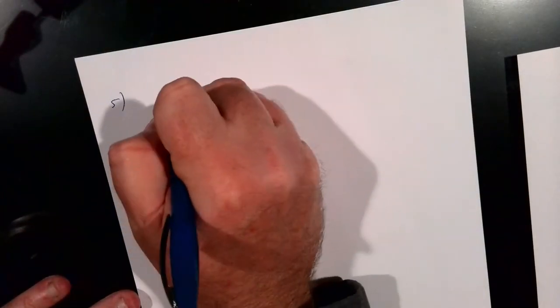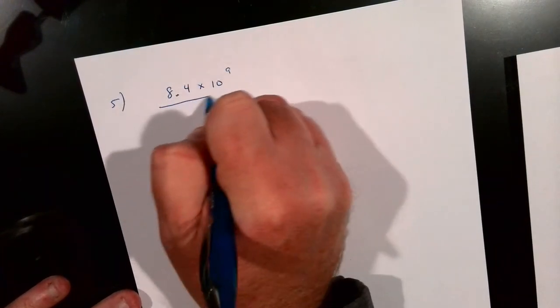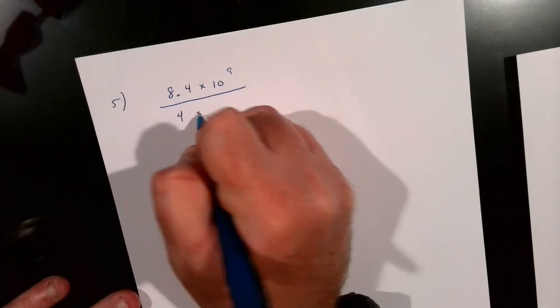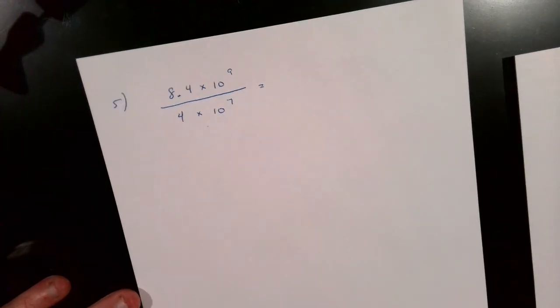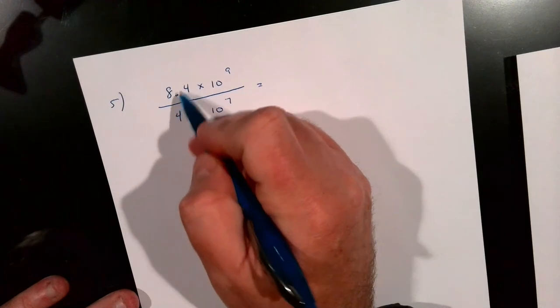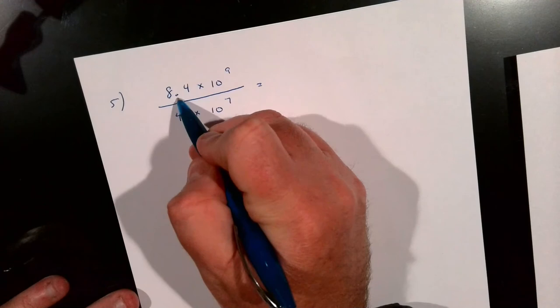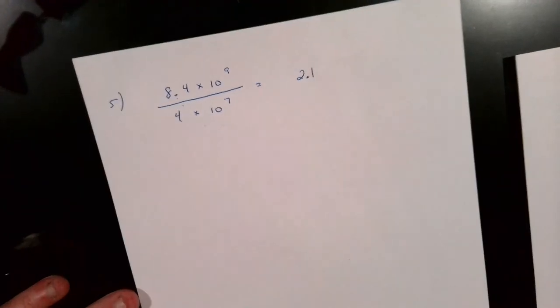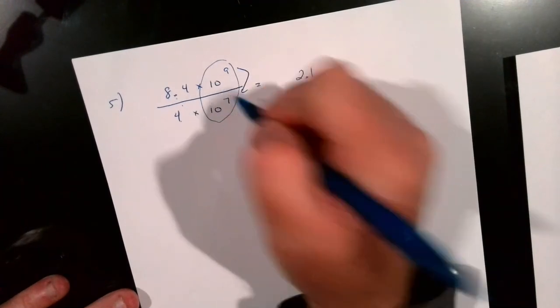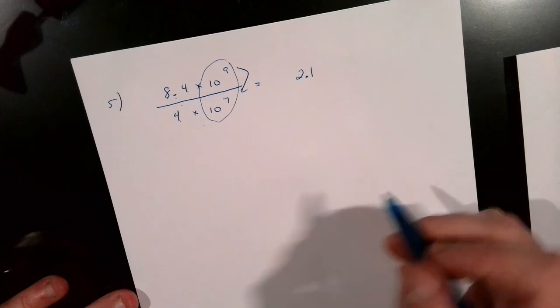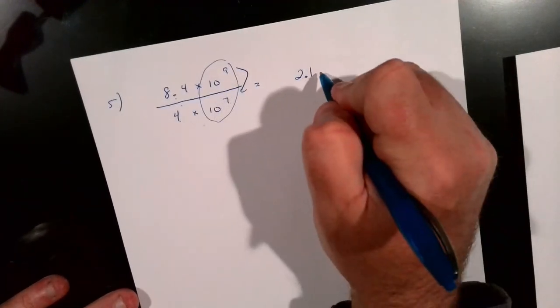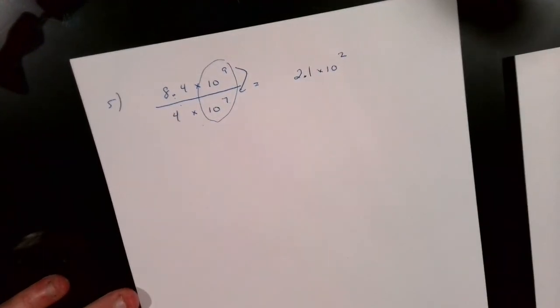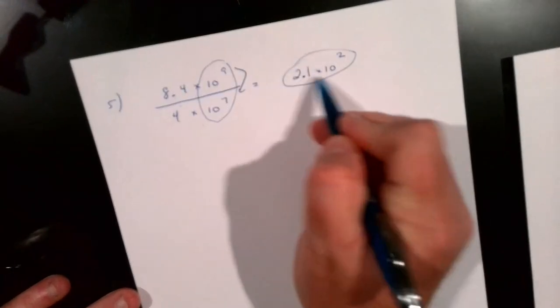Let's talk about division. Say we have 8.4 times 10 to the 9th, and we want to divide that by 4 times 10 to the 7th power. It's just like multiplying — but these numbers we actually divide. So 8.4 divided by 4 gives 2.1. And from our previous lessons, when dividing exponents, we subtract: 9 minus 7 is 2, so we get 10 to the 2nd power. When you multiply you add; when you divide you subtract. Final answer: 2.1 times 10 to the 2nd.